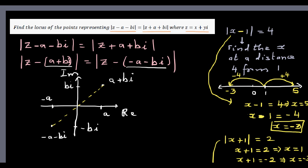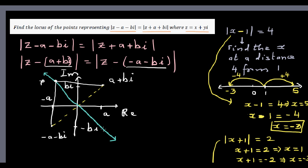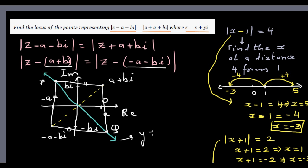The line is such that if you take any point on it, say P, its distance to a + bi equals its distance to -a - bi. If you take another point Q on the line, the same holds. This is basically the perpendicular bisector of the segment joining the two points. From coordinate geometry, this distance equals that distance.